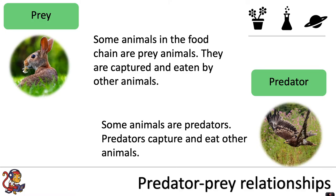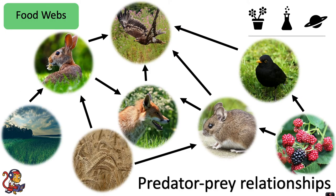Now the eagle and the rabbit may well form part of a much bigger food chain where all these animals have an interdependent relationship. They depend on each other for food, and perhaps if the rabbit numbers went down, the eagle could switch over to eating more fox or mice and so on.